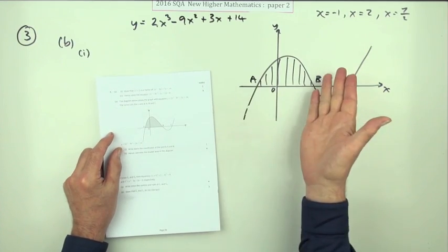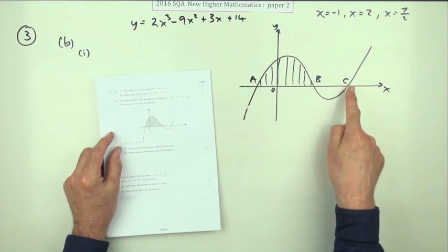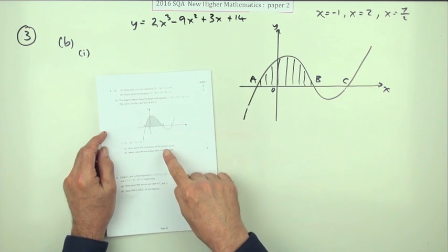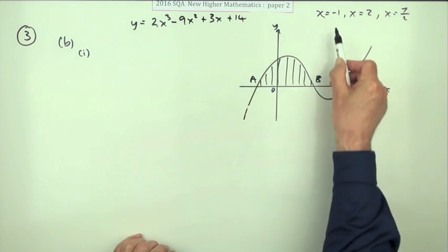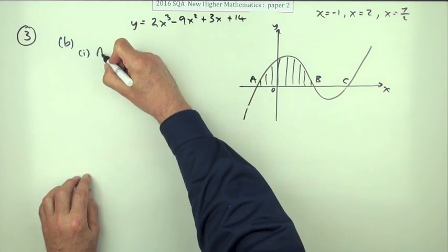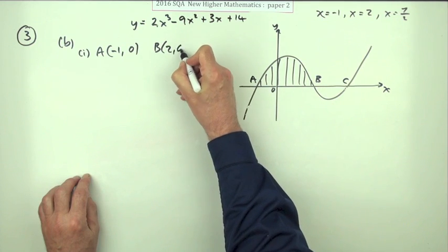Now part b: this diagram shows the graph with that same equation cutting the axis at these three points. Write down for one mark the coordinates of A and B. You know what they are anyway - those must be the first two out of the three solutions you had in part a. So straight away I can say A must be the point (-1, 0) and B must be the point (2, 0).